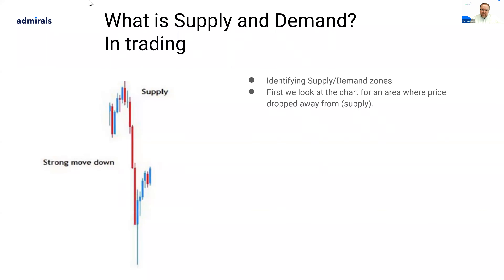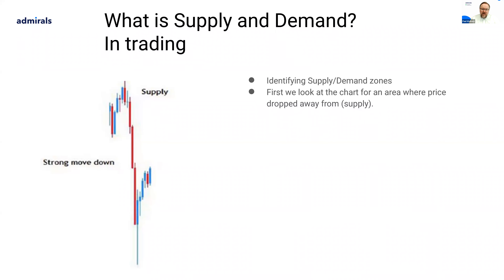Is everyone happy with understanding supply and demand zones at their most basic levels? There's more to it as you go deeper, but what I want to confirm is that you understand what a supply zone is, what a demand zone is, and how they look on charts. A demand zone is where price has just shot up, rallied really strongly from that area. A supply zone is where price has really collapsed, made a strong move down. It's important to recognize them when you see them on charts.